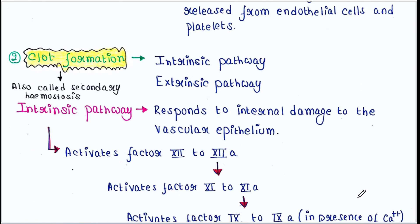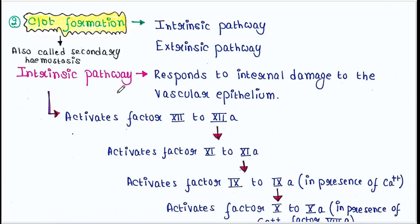The next step is clot formation, also called secondary hemostasis. This step is of two types: intrinsic pathway and extrinsic pathway. The intrinsic pathway responds to internal damage to the vascular epithelium.